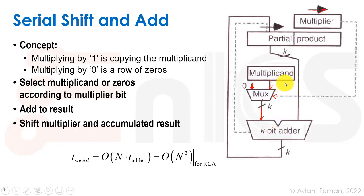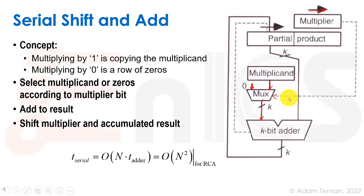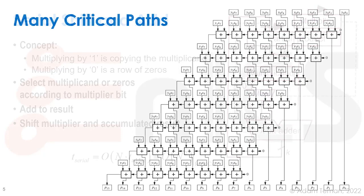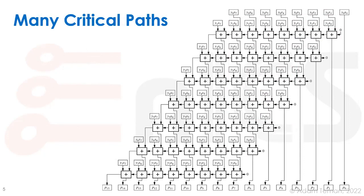The serial shift-and-add approach was important when hardware was limited — like implementing multiplication with a for loop using just an adder. In old hardware, each transistor was expensive so you couldn't afford a full multiplier. In some cheap embedded hardware today, you might still use that approach. With modern hardware, where transistors are cheaper, we can perform these operations in parallel.